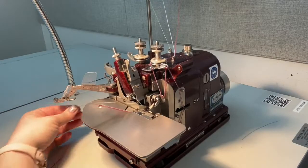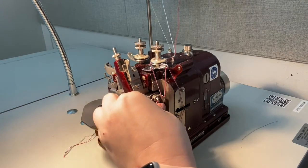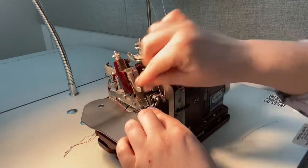Bring all the thread tails out towards the back of the machine and return the presser foot to its locked position. The machine is now threaded and we are ready to sew.